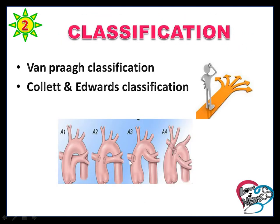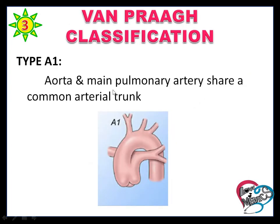Two types of classifications are available. One is the Van Praagh classification and another one is the Collett and Edwards classification. The Van Praagh classification has four types.